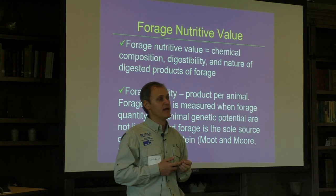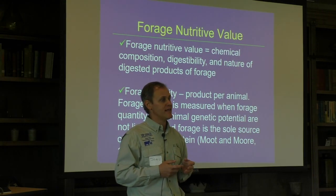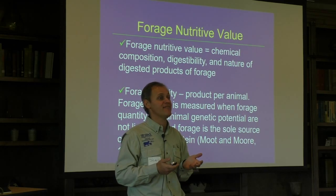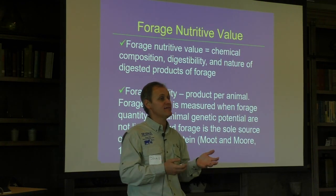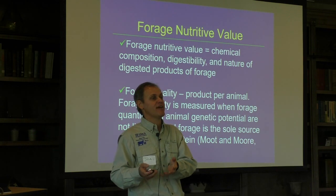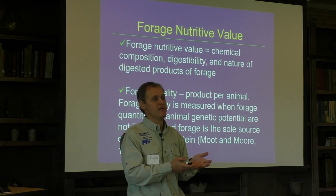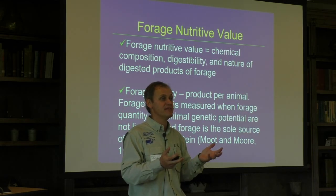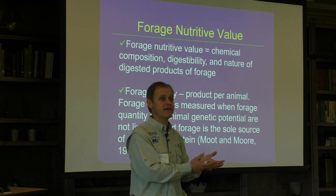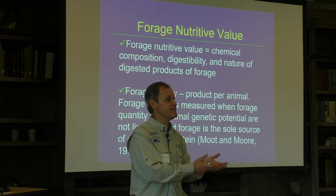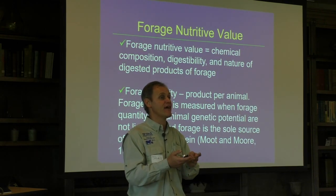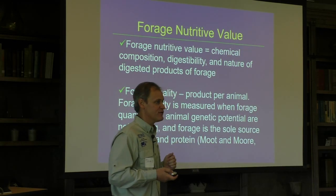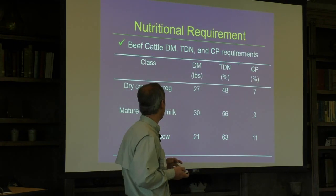For example, a tree legume may have good nutritive value on the leaves but also have an anti-quality component that doesn't translate into animal gain. Ryegrass and tall fescue may test similarly for nutritive value, but fescue has an endophyte that in summer often doesn't translate into animal gain. So ryegrass can have the same nutritive value as fescue but sometimes has better quality.